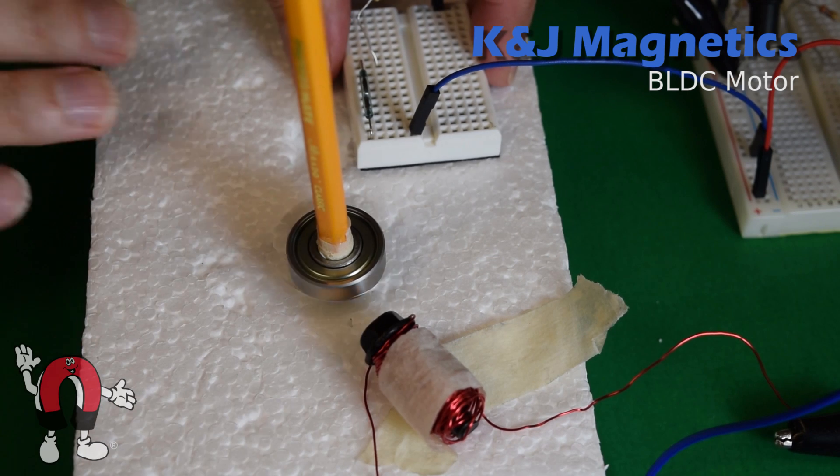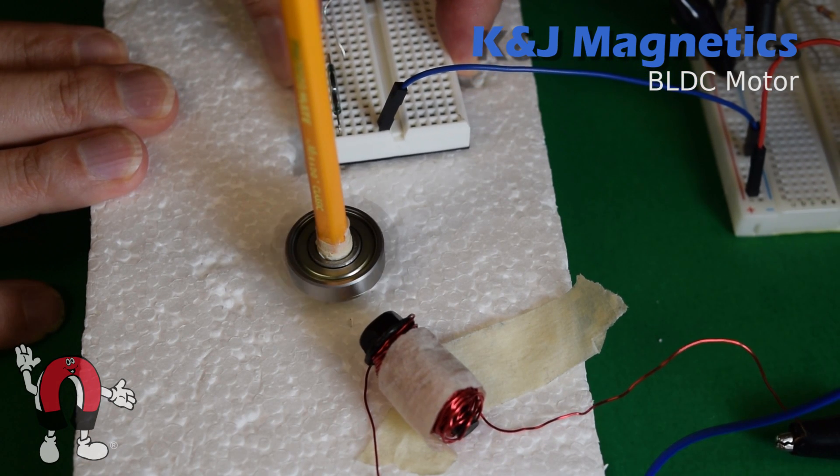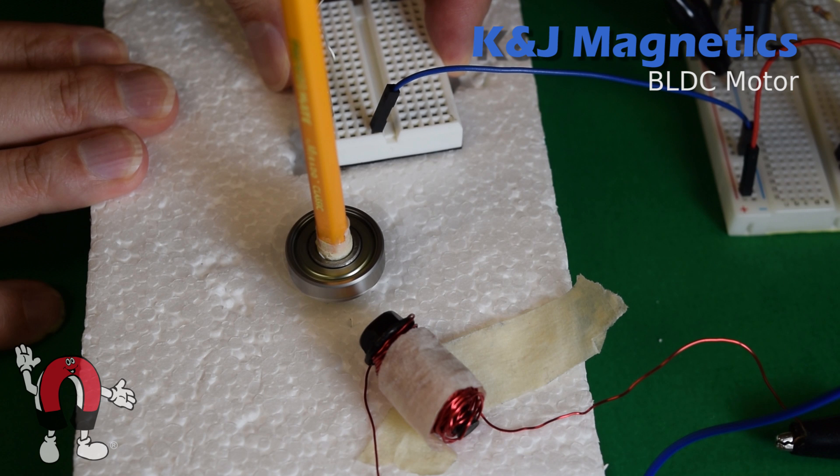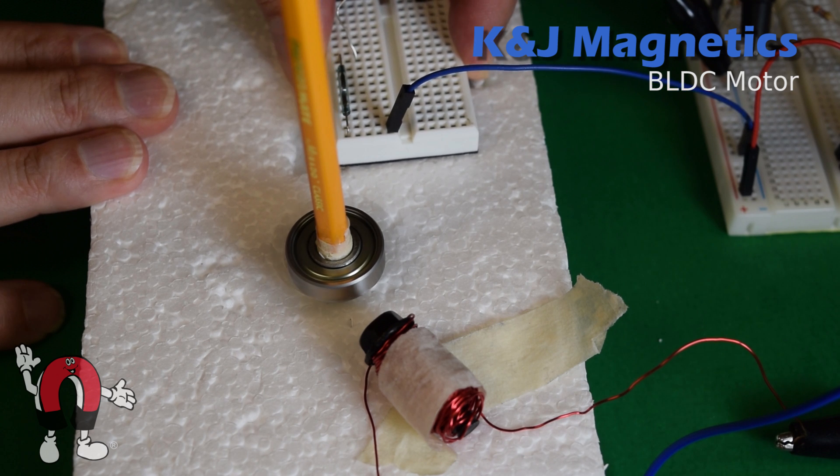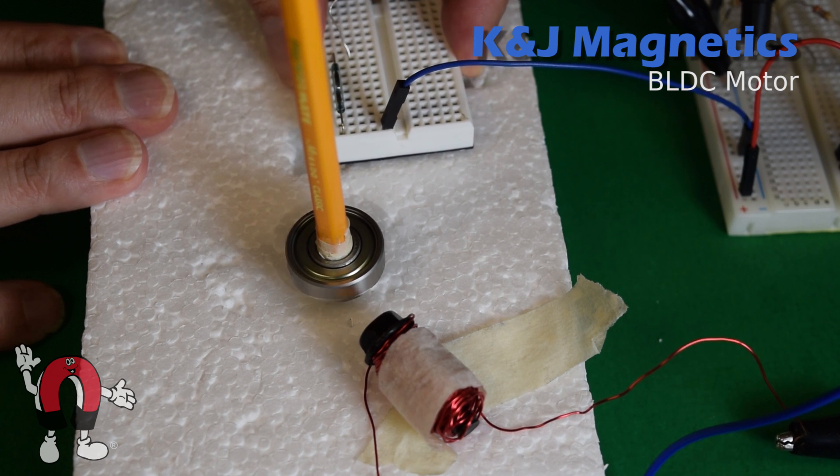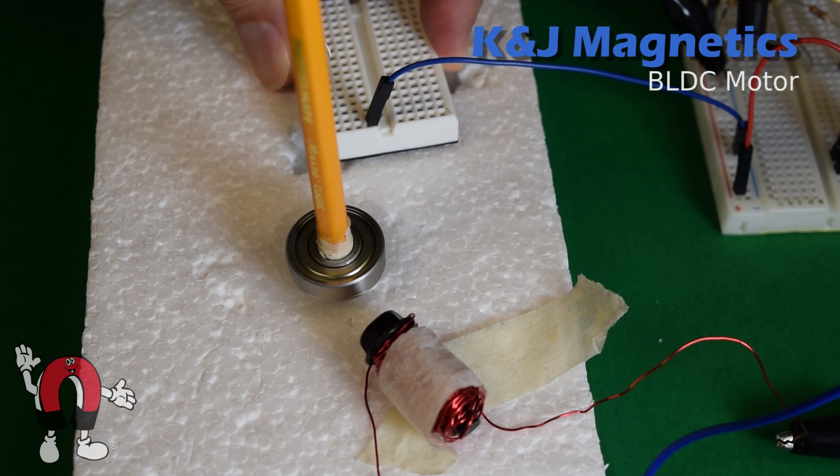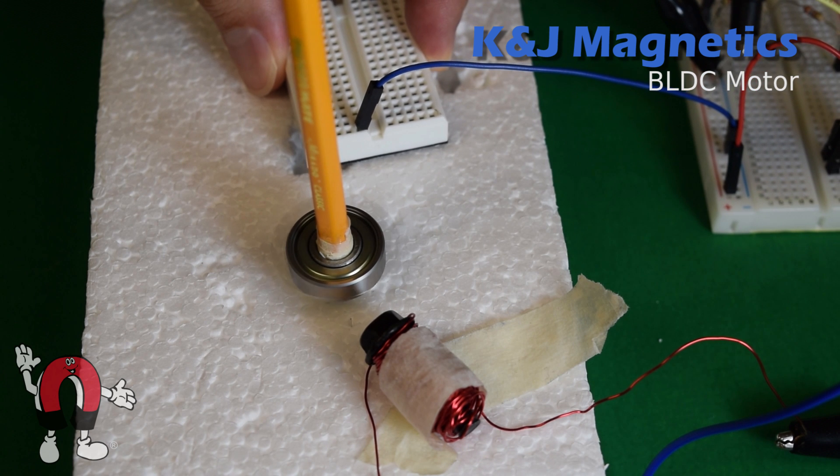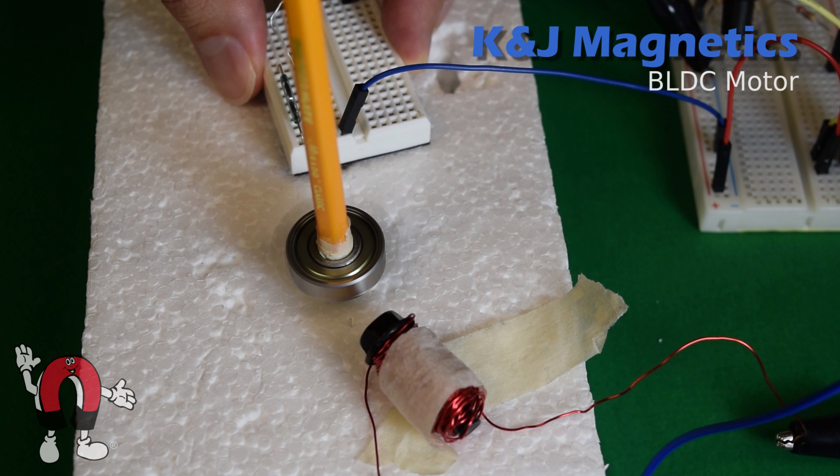Right, so if I move that that way... The position of the reed switch changes how well the motor performs. Moving the reed switch around, we're changing when the electromagnet turns on and off in the cycle. What are we at? It definitely seems to be an optimal just right position.